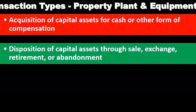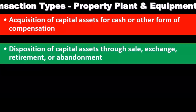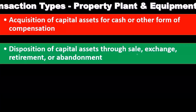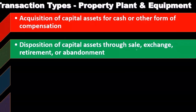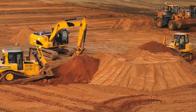Disposition of capital assets can occur through sale, exchange, retirement, or abandonment — meaning property, plant, and equipment may be leaving the organization. A sale of PP&E is not a normal business transaction like selling inventory; it's something more unusual, like selling a forklift or other equipment.